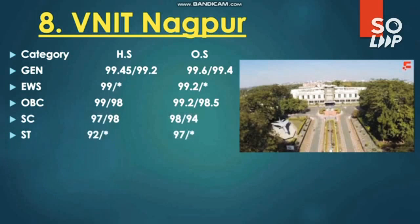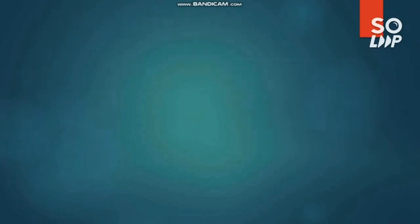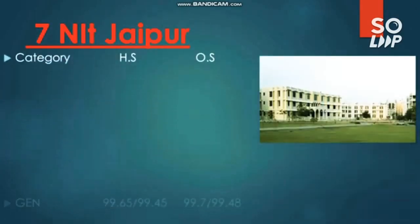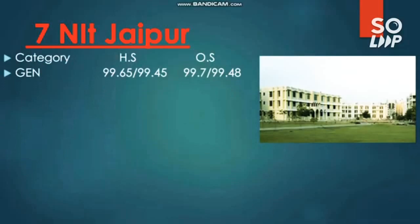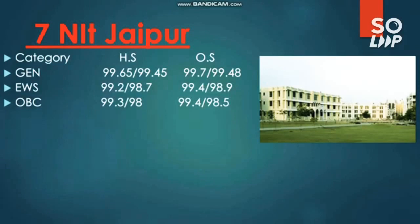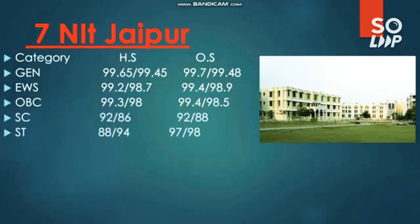The next NIT — number 7 — is NIT Jaipur. For other state General category: 99.7 and 99.484 for male and female. EWS: 99.4 and 98.94 for male and female. OBC: 99.4 and 98.5. SC: 92 and 88. ST: 97 and 98 percentile.